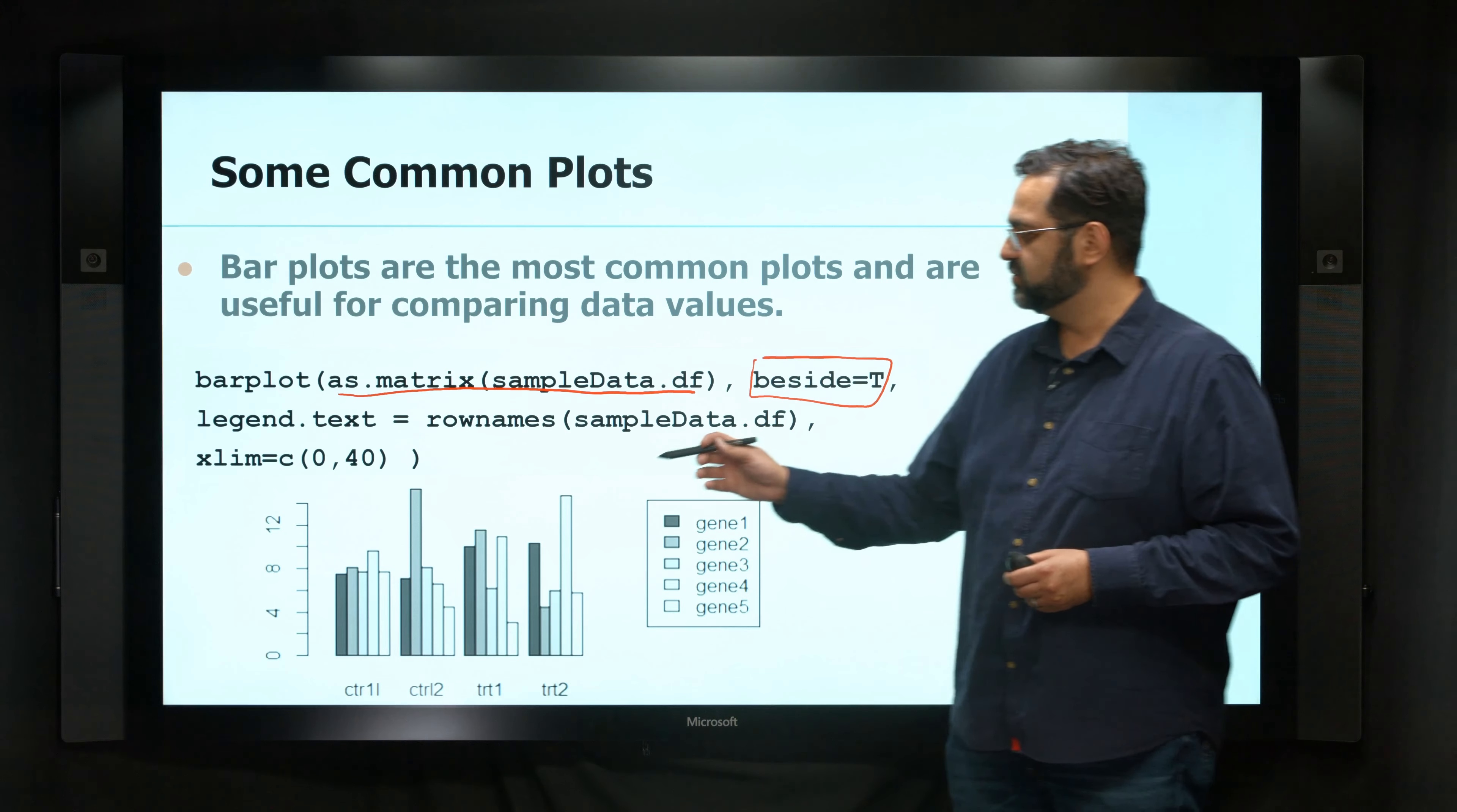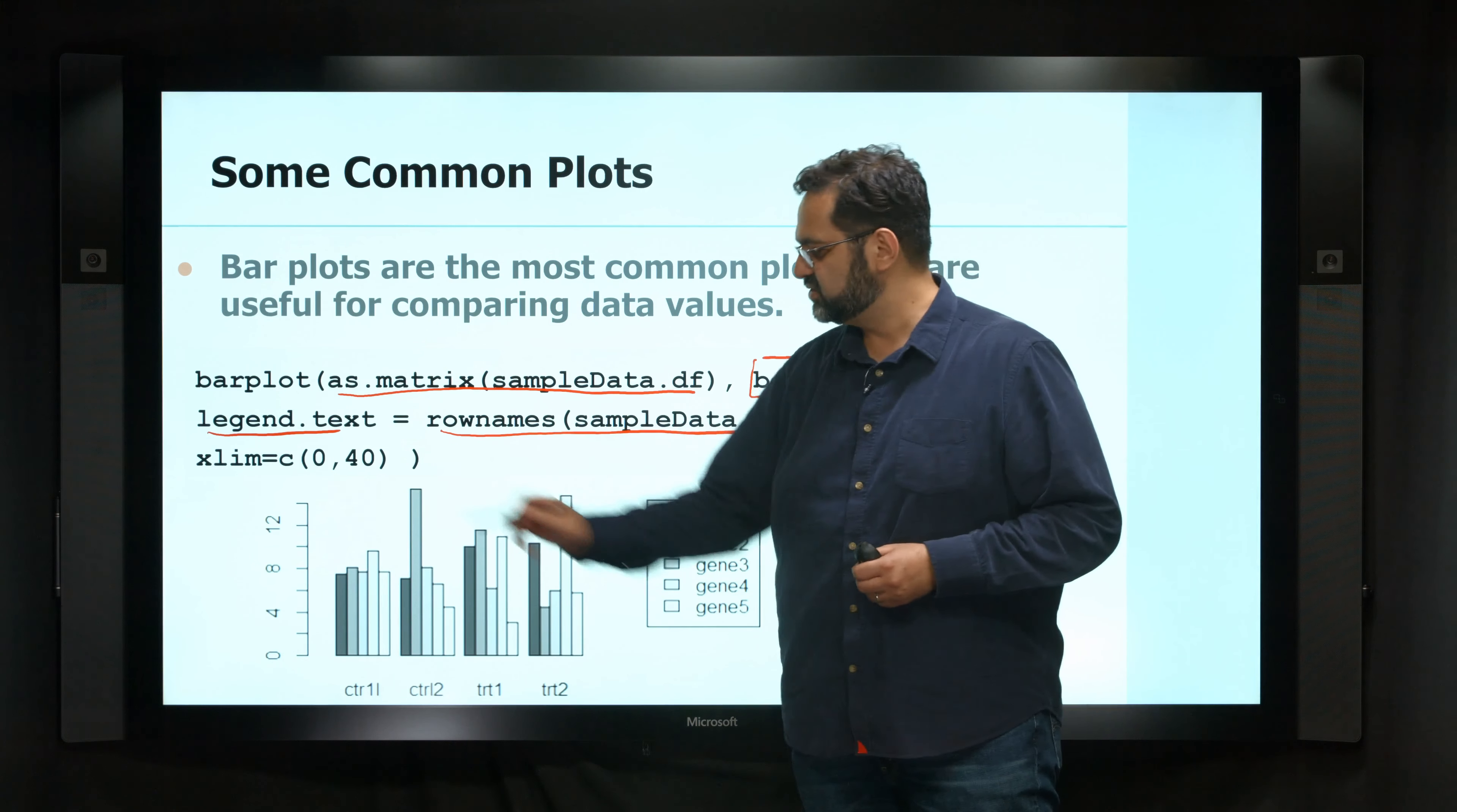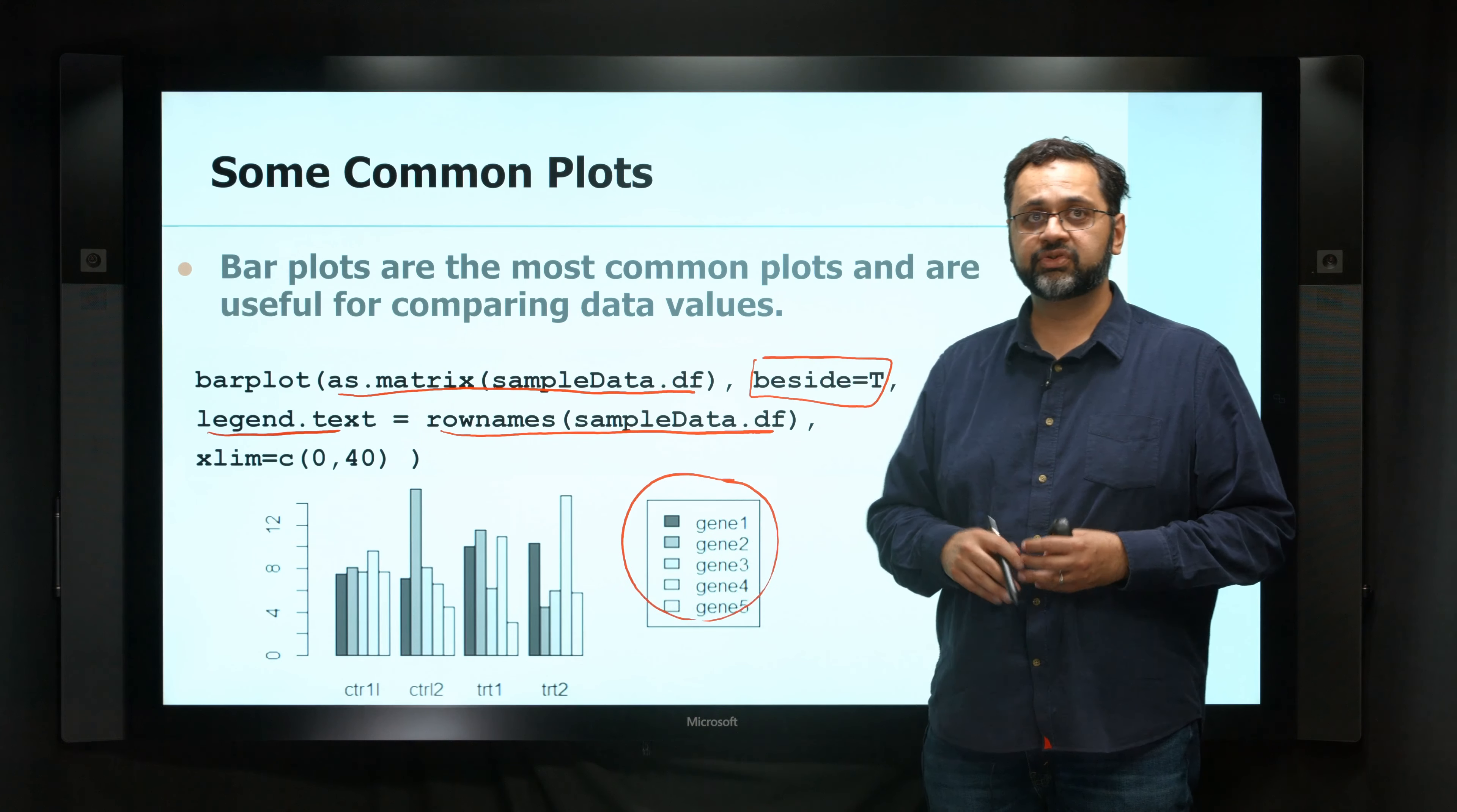And all I had to do then is tell it that here's my legend. There are going to be the row names of my data. And I've actually asked it to be a little bit wider so I can draw the legend and it doesn't overlap on top of this.